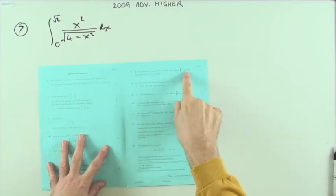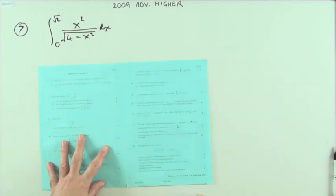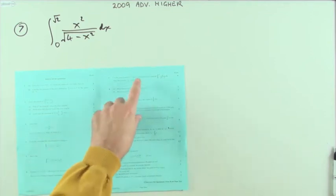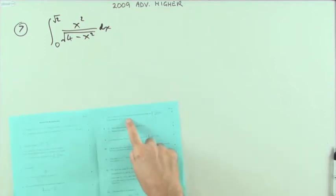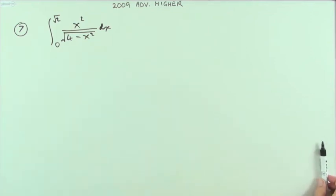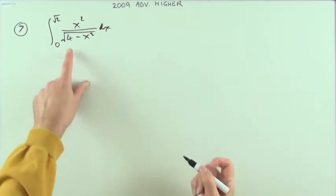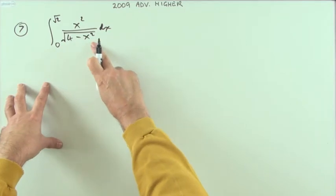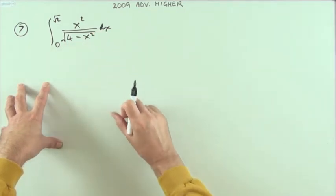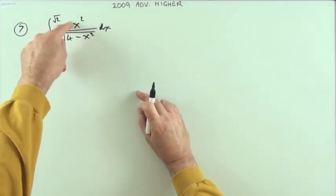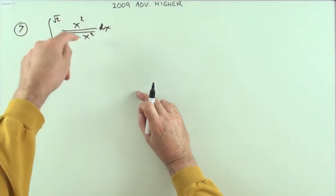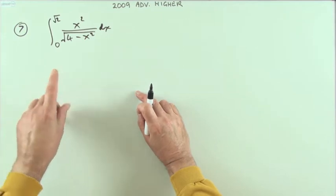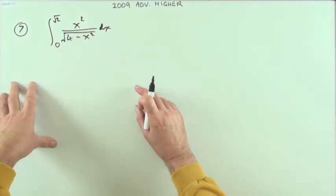Number seven, another integration in the 2009 Advanced Higher paper — another substitution. This time it's telling you the substitution, but you could have guessed that for yourself. With a substitution you'd look to the nasty bit and think of replacing that by a variable, however you would notice that the other part is related to its derivative.